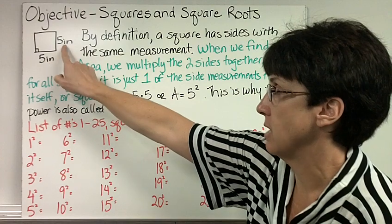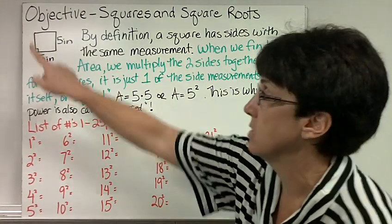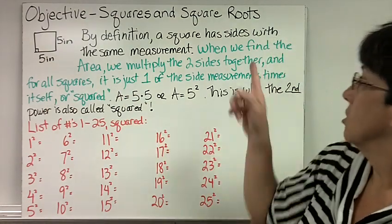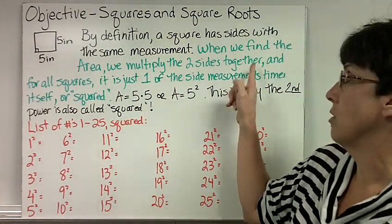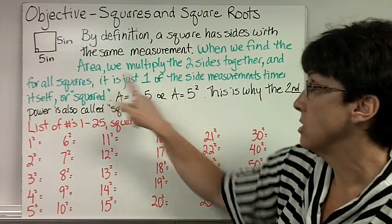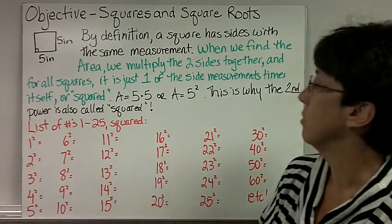And we know it's a square because the sides are the same, 5 inches, and the angles are 90 degrees. That's what that little indicator is. So when we find the area, we multiply the two sides together. And for all squares, it's just one of the side measurements times itself, or squared.